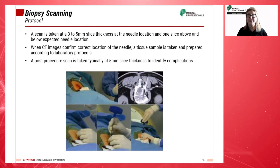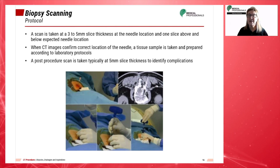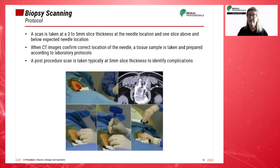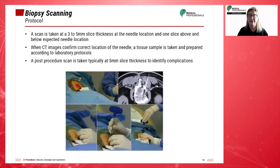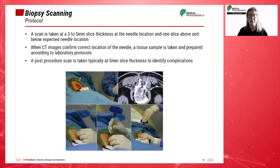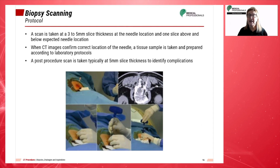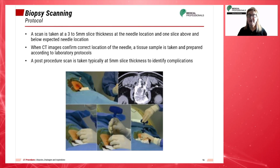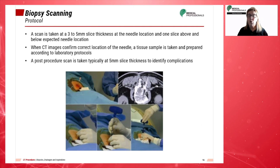For most biopsies, a scan should be taken at 3 to 5 mm slice thickness at the needle location and one slice above and below the expected needle location until the tip of the needle is visualized. When the location is confirmed, tissue samples can be taken and prepared according to laboratory protocols. A post-procedural scan is taken, typically at 5 mm slice thickness, to identify any complications such as pneumothorax in the chest or a hematoma.